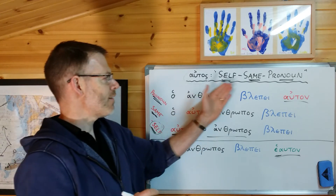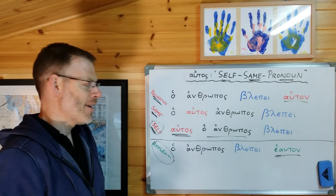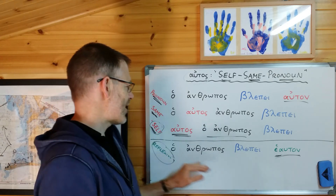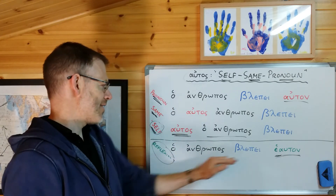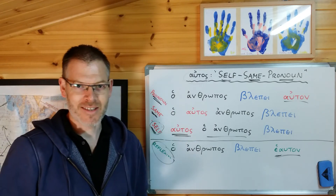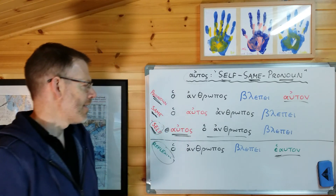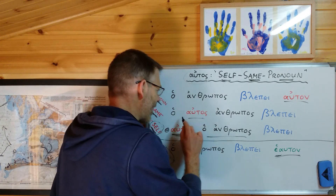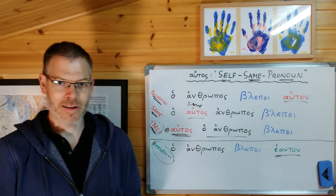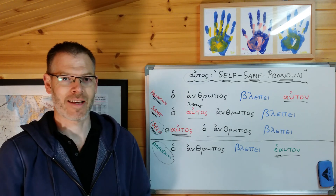So that's an attempt to untangle first the different things that autos can mean — remember the mnemonic self, same, pronoun — and second to disentangle it from the reflexive 'himself' in English, where the subject is also the object: the man sees himself. I hope that's helpful. It is a little complex, but as you do the exercises you'll start to untangle this and it will become more instinctive. Keep going — 30 minutes a day, five or six days a week — and we'll have you mastering this and reading the New Testament in Greek in no time. God bless and bye for now.